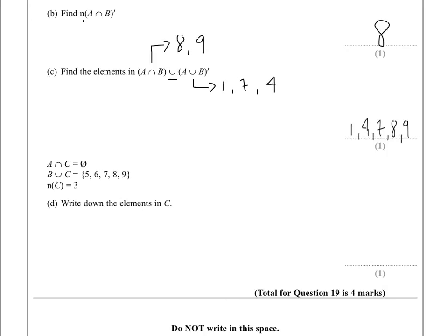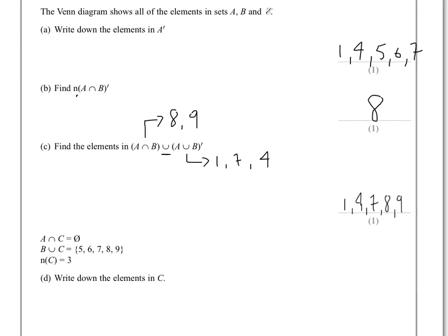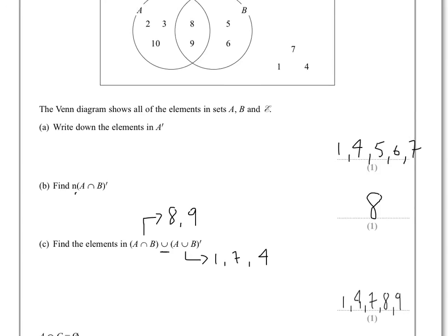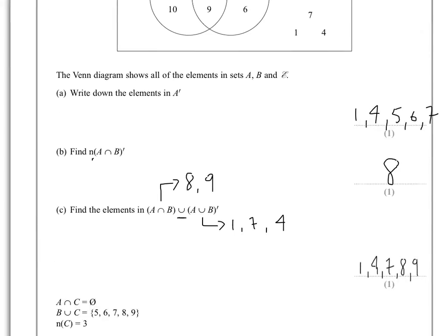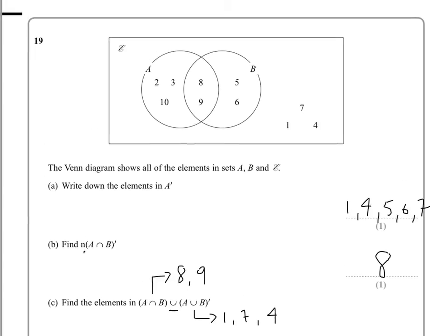So the most important bit of information, I think, is actually the middle bit there. B union C. So what we know is that B, wherever this C is, B's union with C will give the numbers 5, 6, 7, 8, 9.